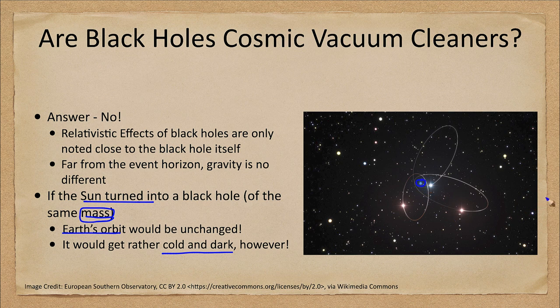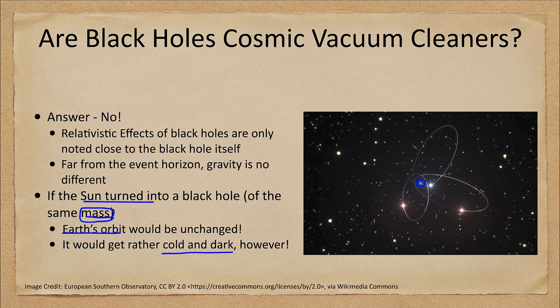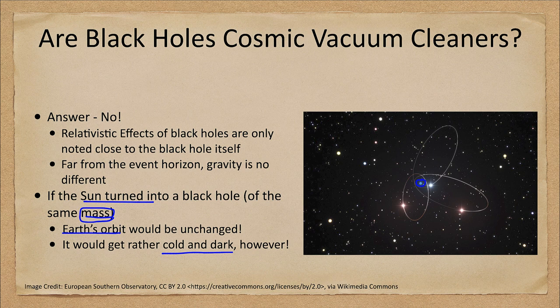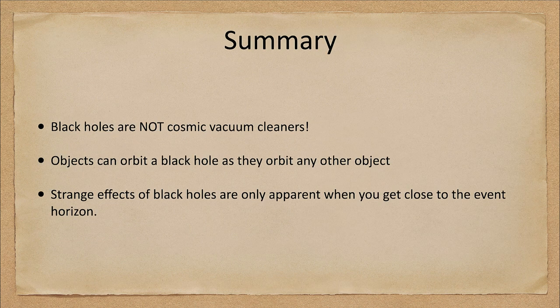These are orbits of stars around it. We can map out those orbits. As long as they don't get too close to the event horizon, they can remain in stable orbits around the black hole for a long, long time.